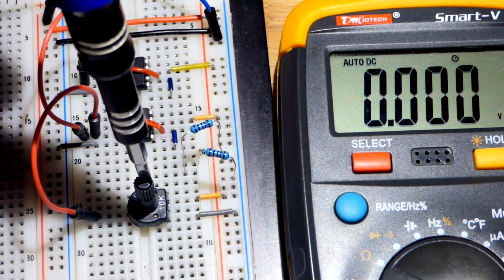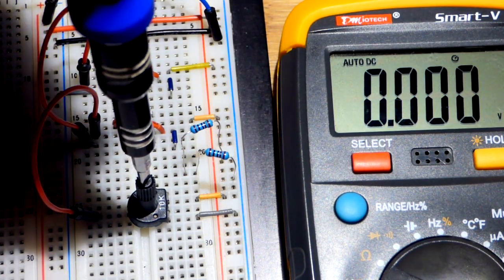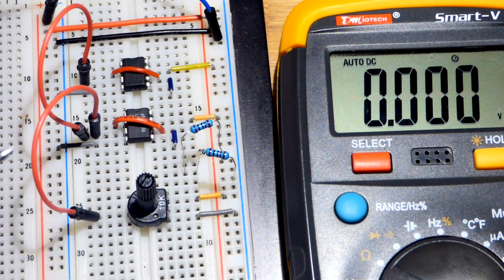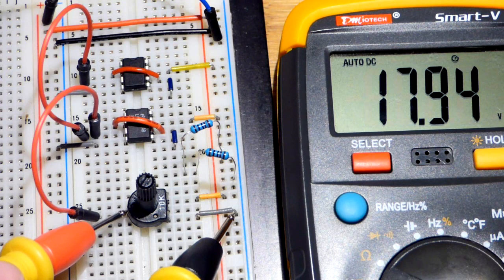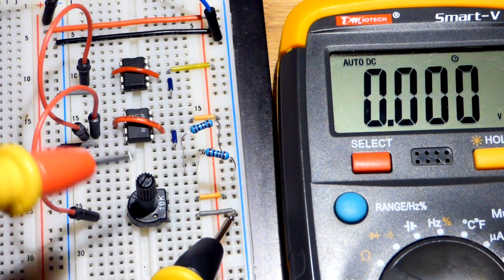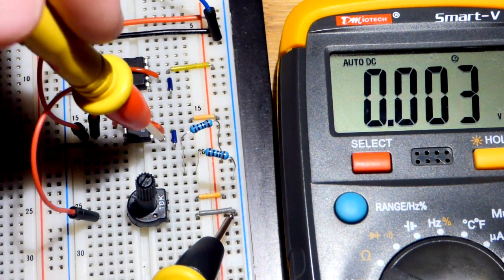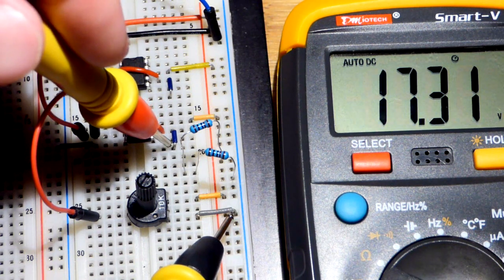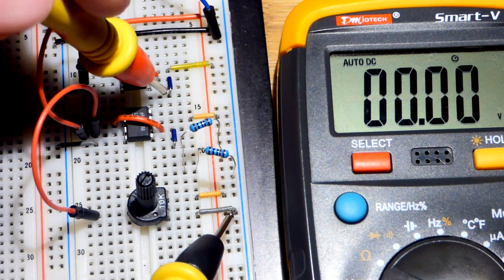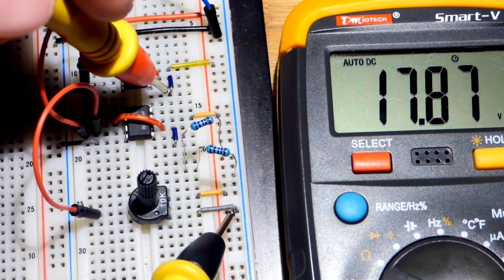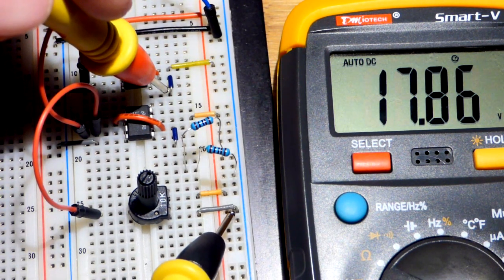We're going to turn the trim pot up all the way. Now we have the 18 volts, because we're all the way up to the positive rail from there. And there, you can see, we have about a diode drop below 18 volts. And in this one, it's a lot closer.